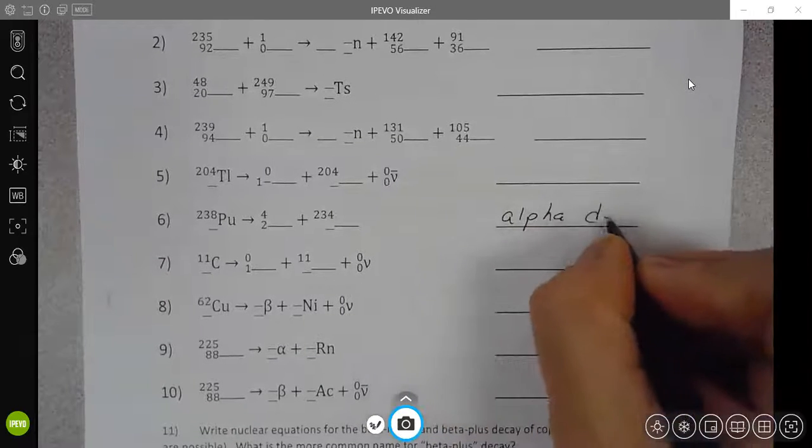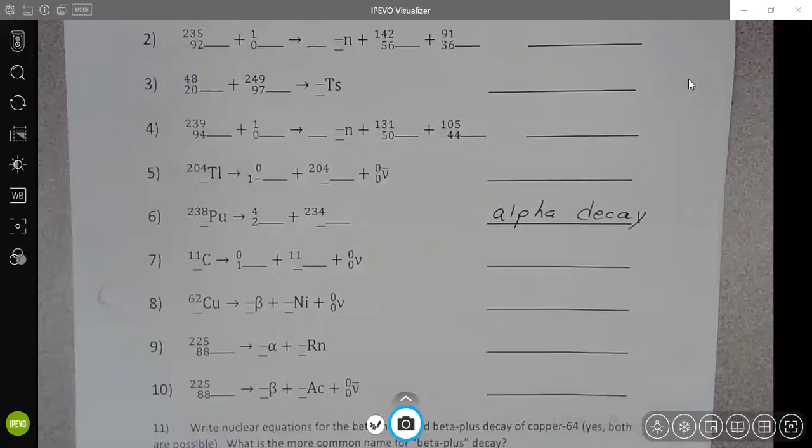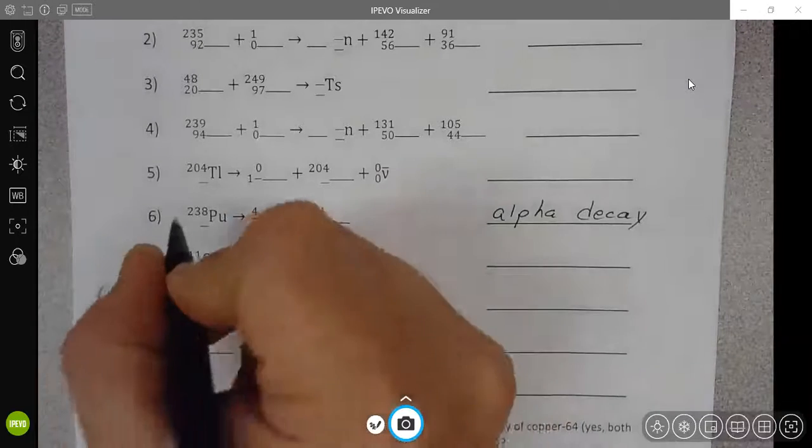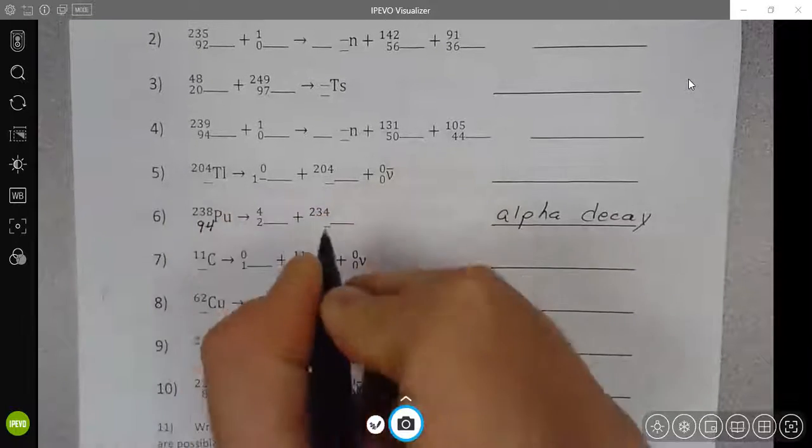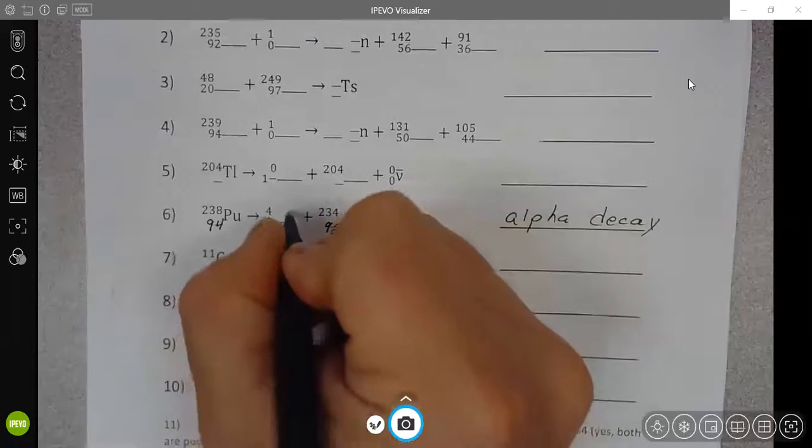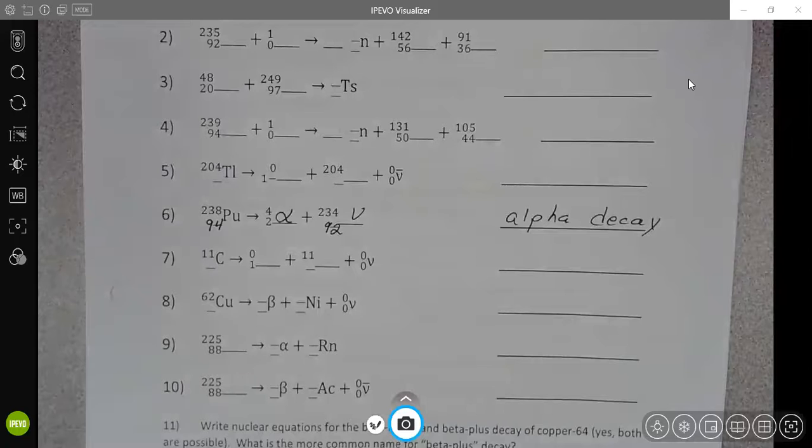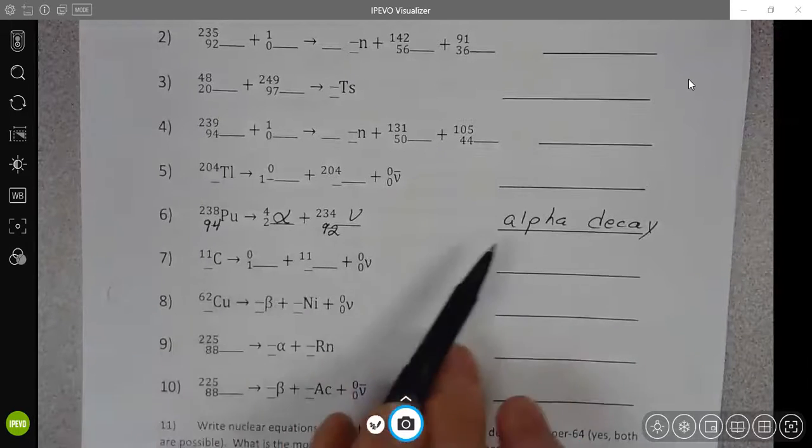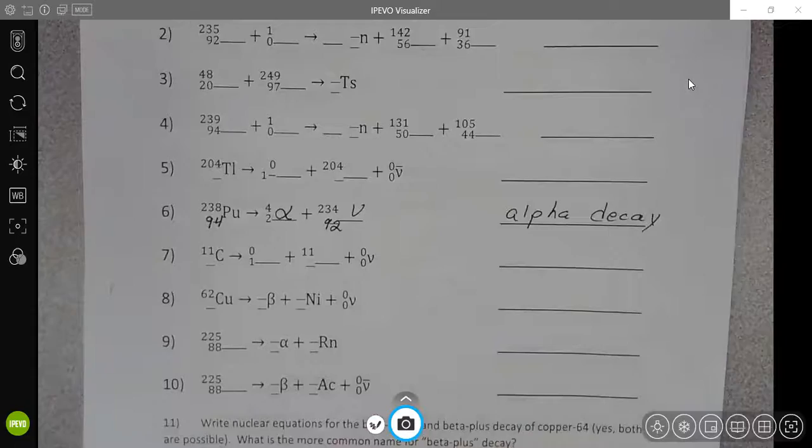You could also identify that as an alpha decay because after you fill in these atomic numbers and after you identify this as an alpha particle because it's coming out from radioactive decay, then that would also be a clue that this was alpha decay.